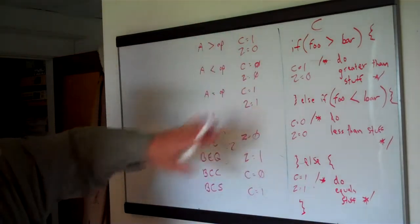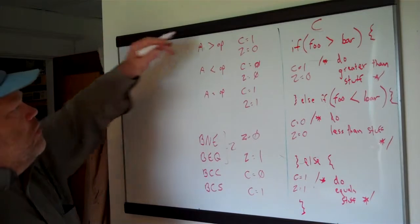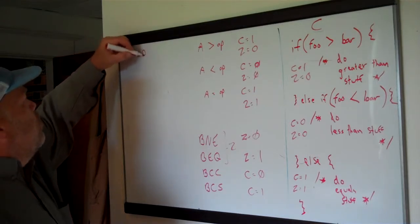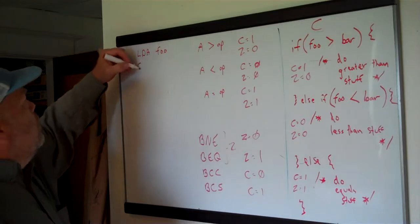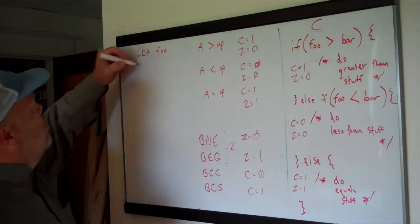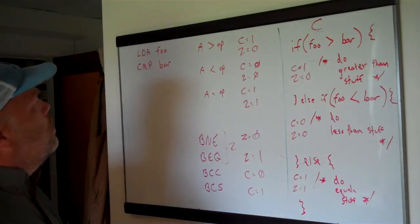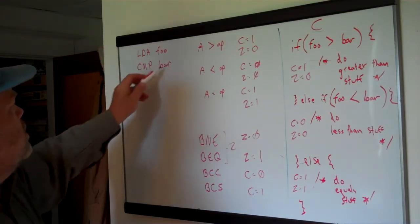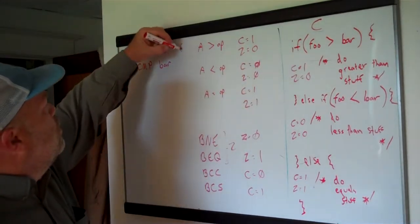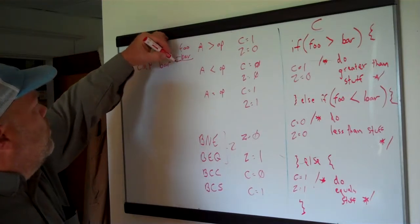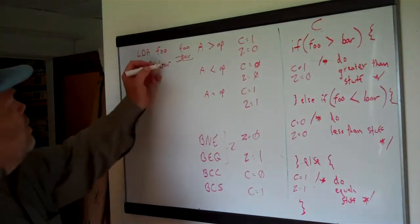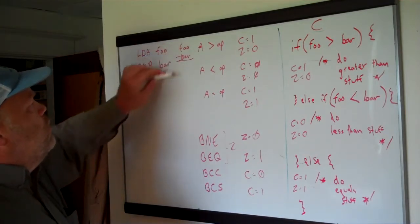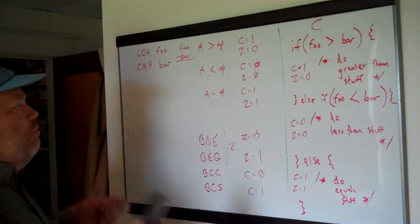To write this in 6502 assembly, we'll assume foo and bar are locations in memory that we can get values from. We'll start by loading foo into the accumulator and then compare it to bar. This is going to subtract — remember when you do a compare, it takes the operand and subtracts it from the accumulator. So we're doing foo minus bar and figuring our results based on this. Here's where it starts to look different: you don't have a way to say, if foo is greater than bar, do this particular block — you have to build that part yourself.